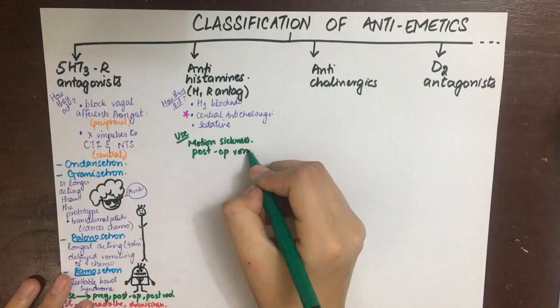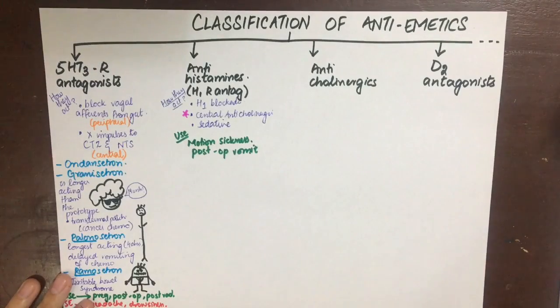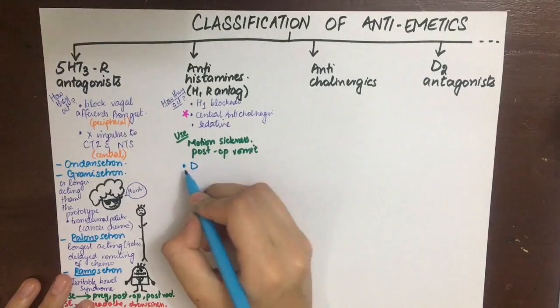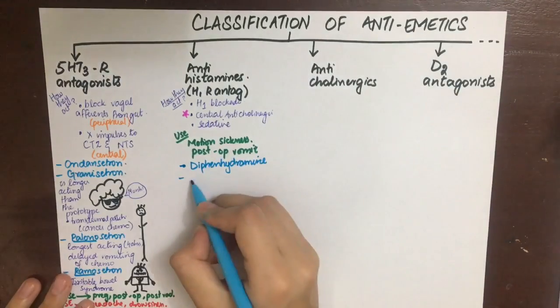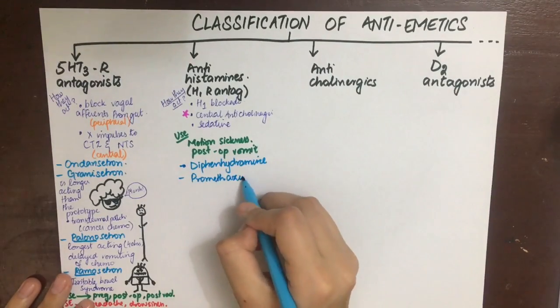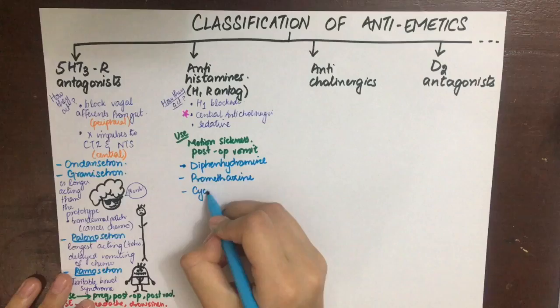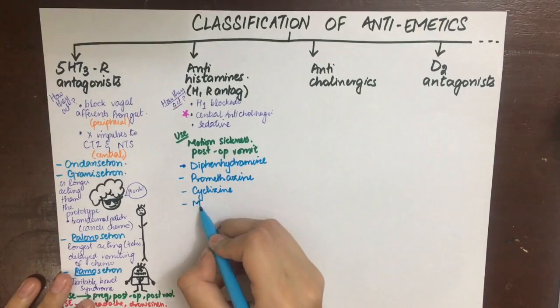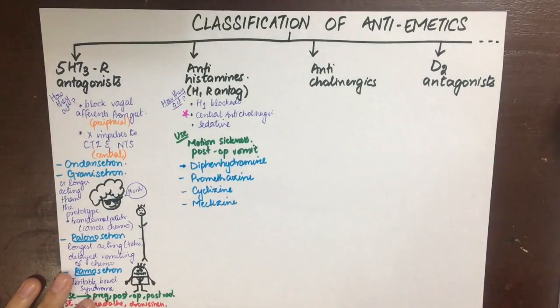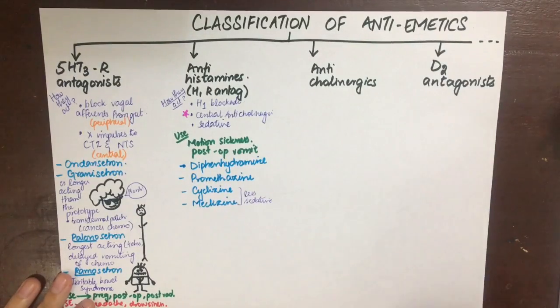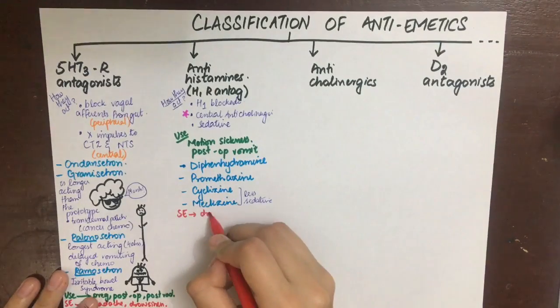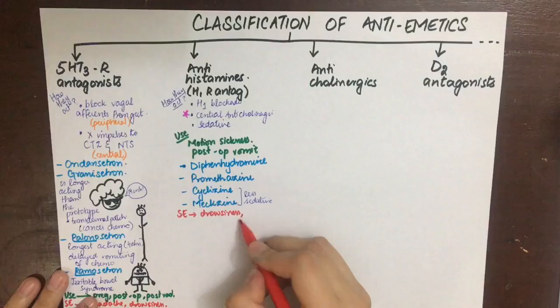Their use is mainly in motion sickness, post-operative nausea, and other sorts of vomiting. The main drugs used are diphenhydramine, promethazine, cyclizine, and meclizine. Cyclizine and meclizine are less sedative. Their side effects are mainly drowsiness and dry mouth due to the antimuscarinic action.